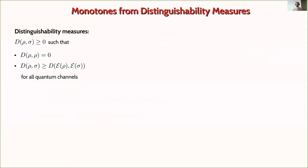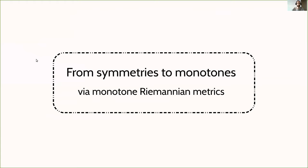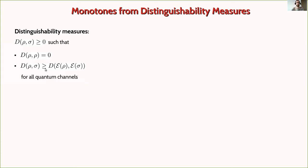In quantum information there are quantities called distinguishability measures: functions of two quantum states that output a non-negative real number representing how distinguishable the two states are. The distinguishability of each state with itself is zero. A second very important property is the data processing inequality: if you process two quantum states with the same quantum operation, the distinguishability can only decrease. This inequality is the main idea I will invoke to get monotones.